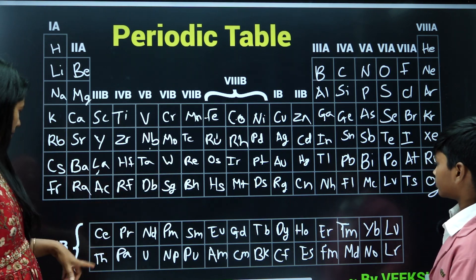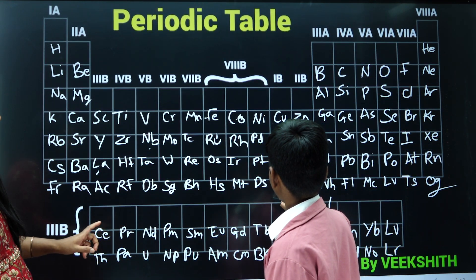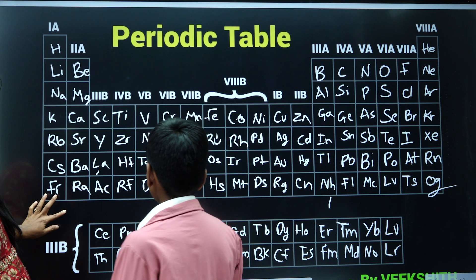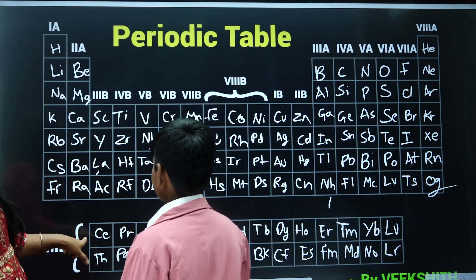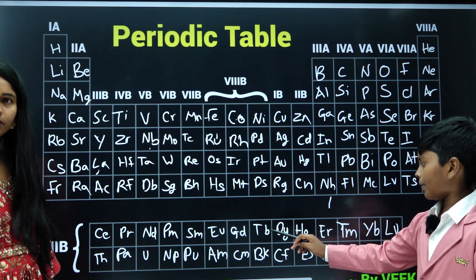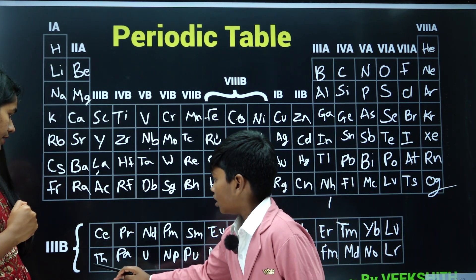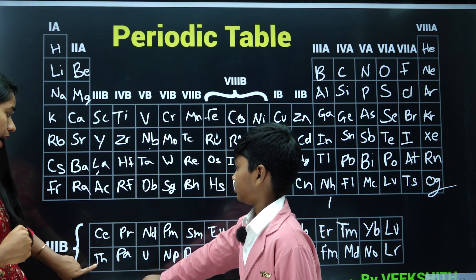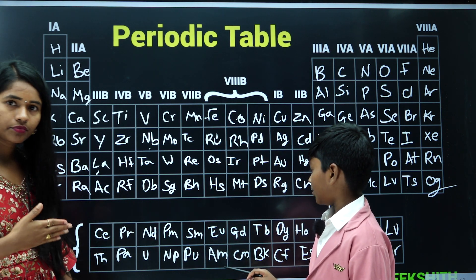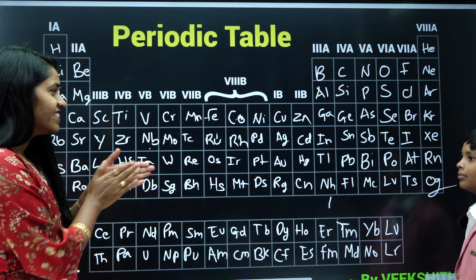After lanthanum — wait, one second. Okay. Now read the next elements: cerium, praseodymium, neodymium, promethium, samarium, europium, gadolinium, terbium, dysprosium, holmium, erbium, thulium, ytterbium, lutetium. Okay, next — these are lanthanides. Now actinides: thorium, protactinium, uranium, neptunium, plutonium, americium, curium, berkelium, californium, einsteinium, fermium, mendelevium, nobelium, lawrencium. Very good.